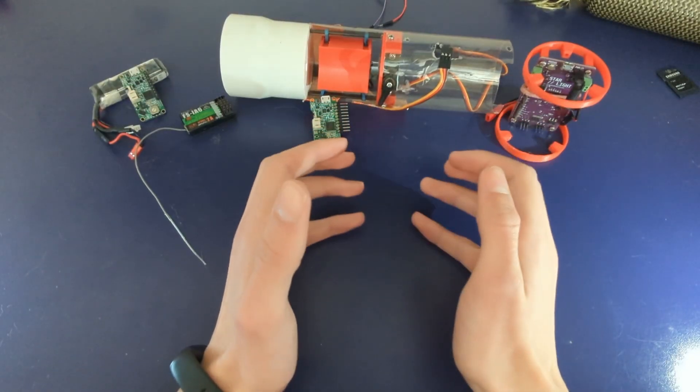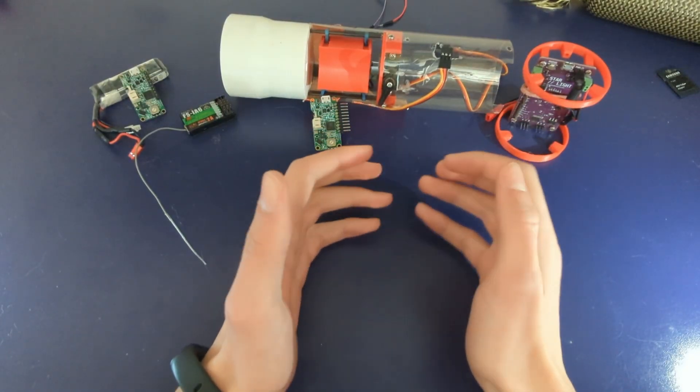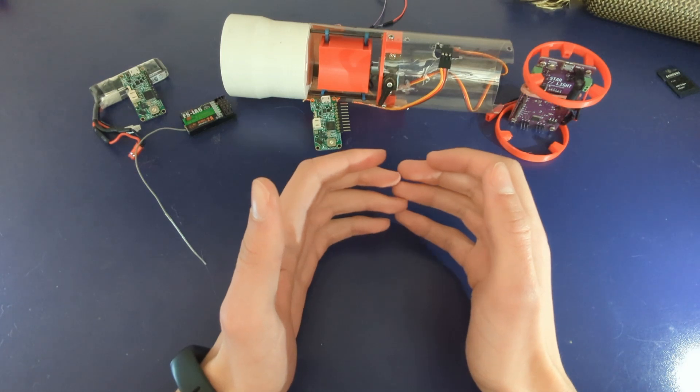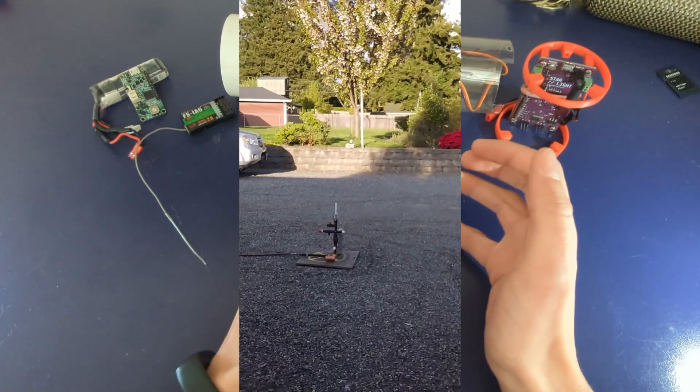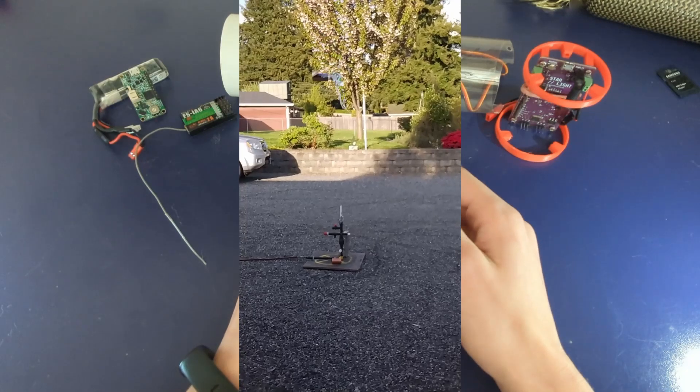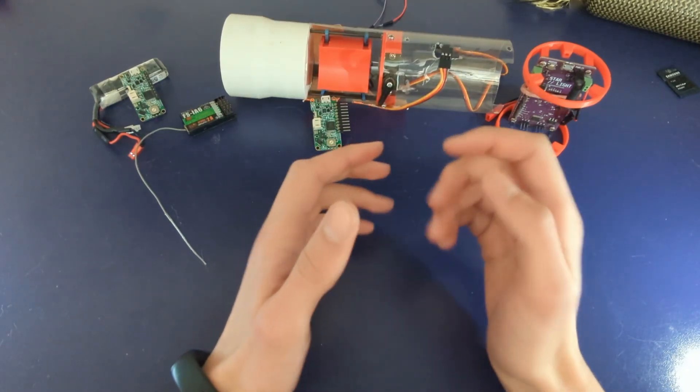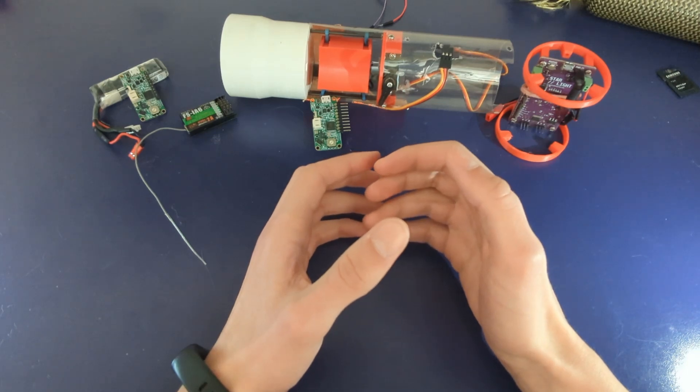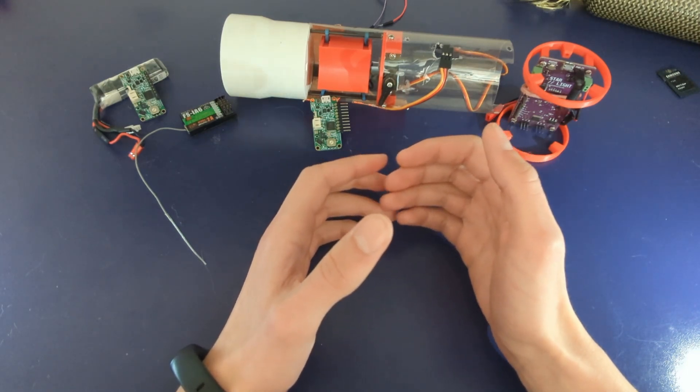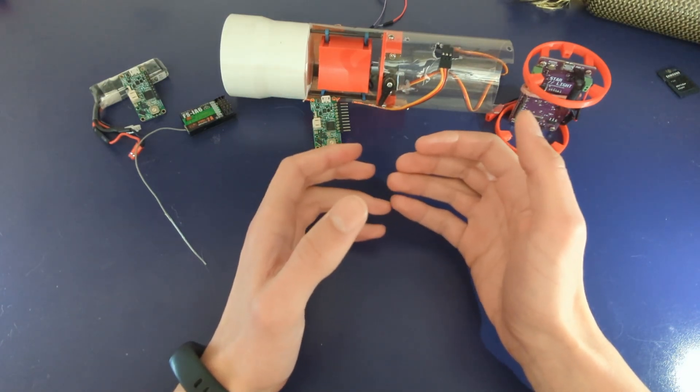When I started to develop parachute systems a long time ago, I started by trying to just use aerodynamic forces to get the parachute out. This didn't work and after a while I decided to switch to electronic systems. I knew the heart of these would be a servo motor like this one, which could hold the door closed and then move out of the way to let it open, but these servos needed some way to be controlled.